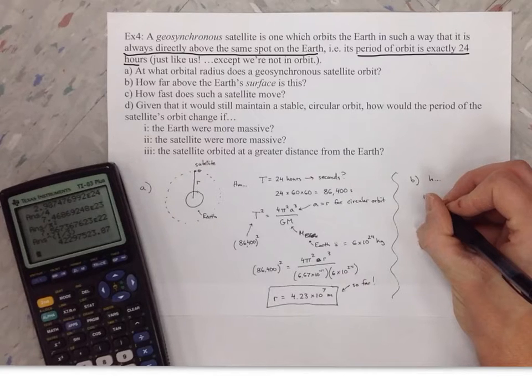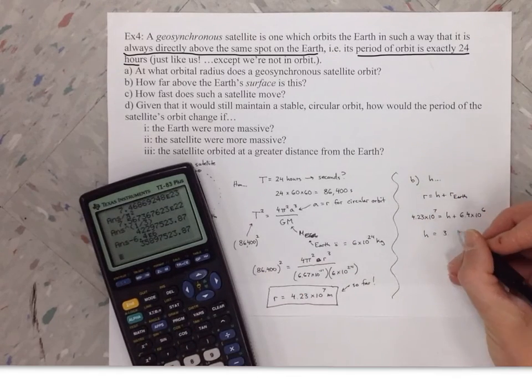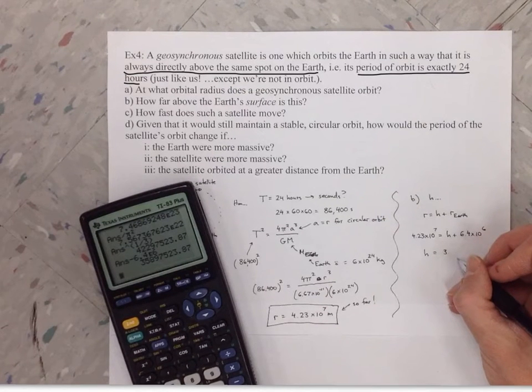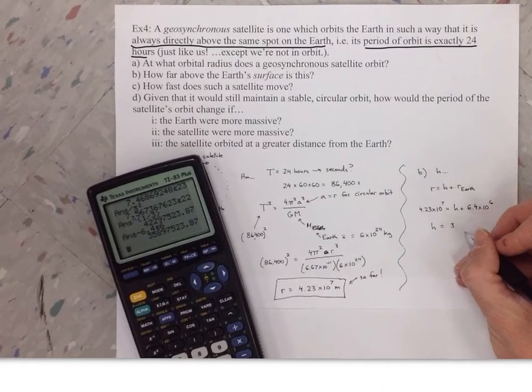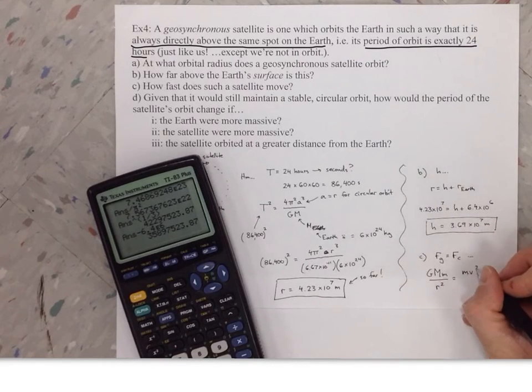Part B wants to know how far above the Earth's surface that is. When they ask for height above the Earth's surface, that is different from what the orbital radius is, right? That's like if you looked up how far above your head is it, that's the height, not the radius. So we have to subtract the radius of the Earth, which is a fairly simple operation.